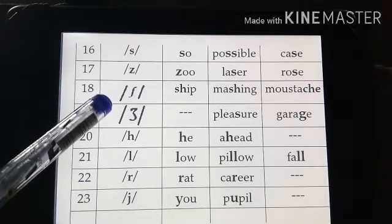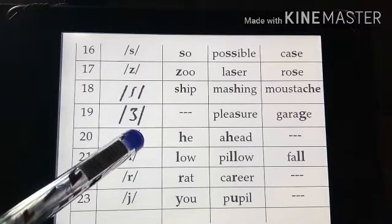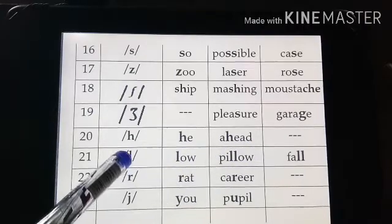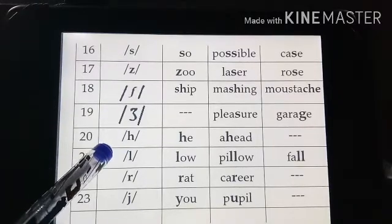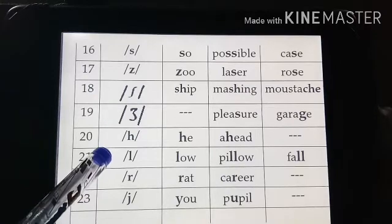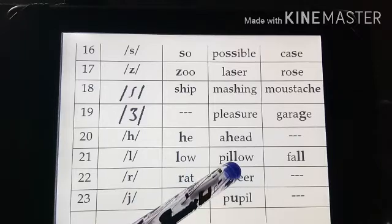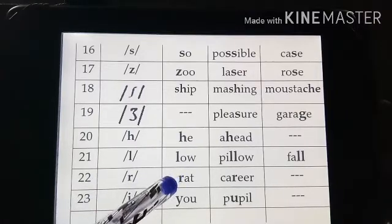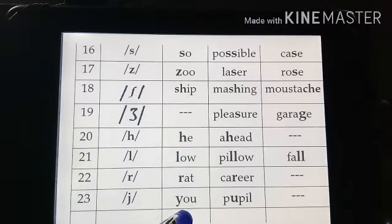Next we move on to /h/. This is /h/ — there is no friction in the mouth, just like 'ah'. This has been placed in consonants: 'he', 'ha', 'head'. Then /l/ — this sound comes when the tip of the tongue touches the roof of our mouth, as in 'live', 'below', 'fall'.